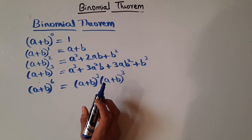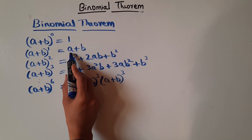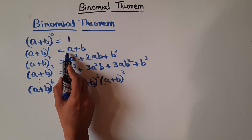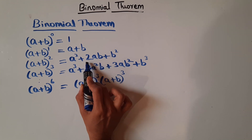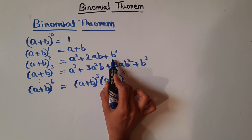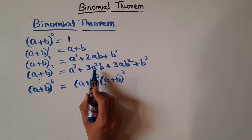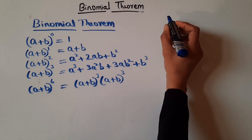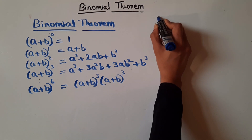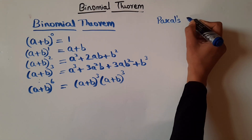Now let's talk about coefficients. The coefficient of a in (a+b)¹ is 1, the coefficient of b is 1. In (a+b)², the coefficient of 2ab is 2, and of a² and b² is 1 each. In (a+b)³, the coefficient of a²b is 3. There is a concept called Pascal's triangle which talks about these coefficients — it's a triangle formed by using the coefficients.